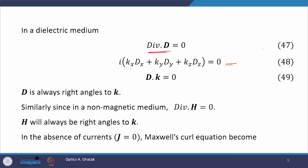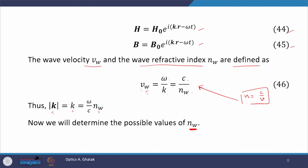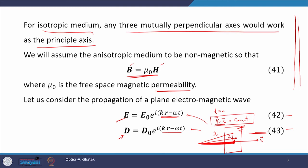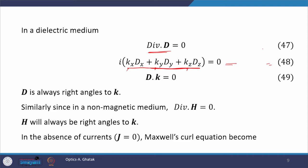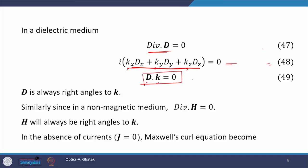We get k dot D from taking the divergence of equation 43. This equation is nothing but the dot product between D and k, which equals 0. Since the dot product between D and k equals 0, it means D is at right angles to k — they are perpendicular. Equation 49 says that D is perpendicular to k. Similarly, in a non-magnetic medium, divergence of h equals 0, and from there we can derive that h is perpendicular to k.